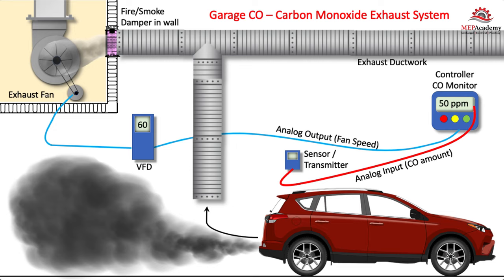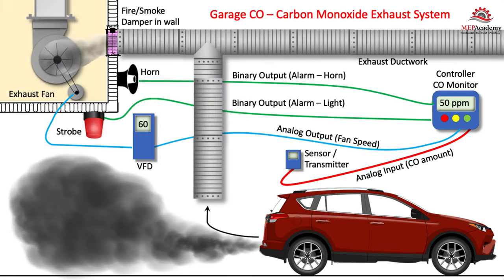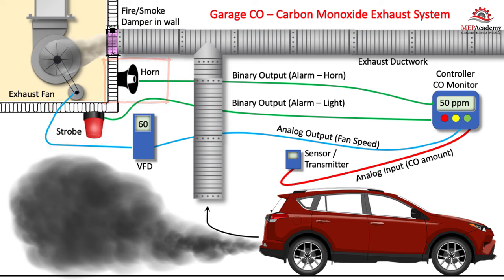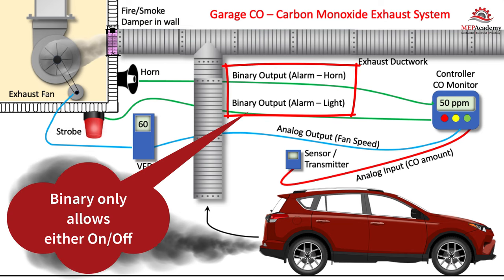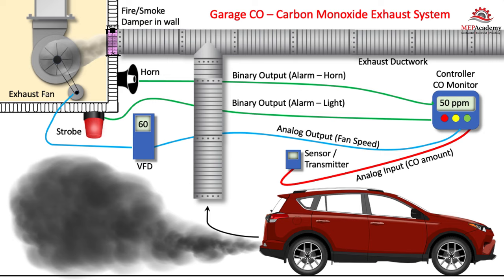We can still add a few more binary output devices to bring attention to a dangerous situation. By adding two more output devices — a strobe light and a horn — we can notify garage occupants that the levels of carbon monoxide have reached a dangerous level. The carbon monoxide controller will have a setting that sends a binary signal to the horn and emergency strobe light to turn on when the CO exceeds a hazardous level. The garage exhaust fan can also be set up to run at low and high speed, or using a VFD if acceptable to local code.